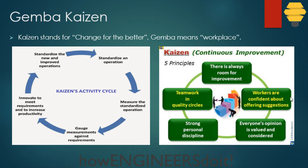The second principle is that workers are confident about offering suggestions. This is an important principle — even workers have the freedom to raise and offer suggestions, as they are the people at the real Gemba. The third principle is that everyone's opinion is valued and considered — not just workers, but top management, middle management, and everyone.